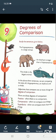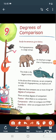And children, today we will go through chapter 9, Degrees of Comparison. So, let's begin. Study the sentences given below. The hippopotamus is a large animal. Next, an elephant is larger than a hippopotamus. The whale is the largest animal. In the above three sentences, we are comparing the sizes of a hippopotamus, an elephant, and a whale.